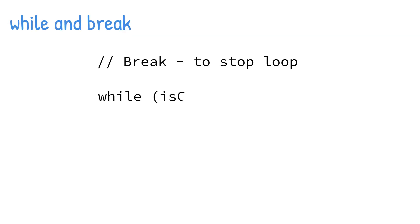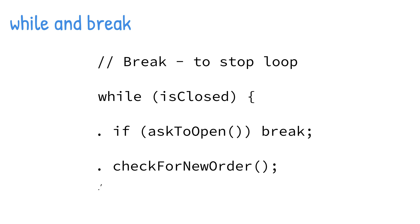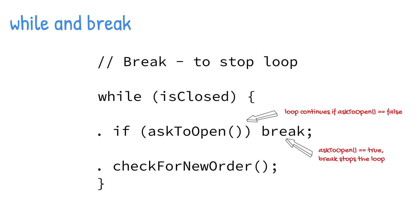Using the break statement allows you to stop looping by evaluating a condition inside the while loop. In this example, the isOpen method is called inside the loop by an if statement executing logic that returns a boolean. As long as the value returned is false, the loop continues as normal by calling the checkForNewOrder method. But once isOpen returns true, the break statement is executed, stopping the loop — checkForNewOrder is not called and the entire while statement stops running.